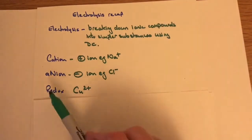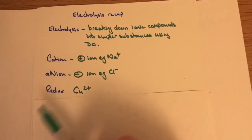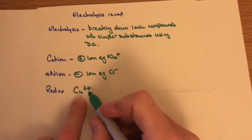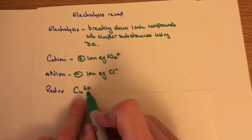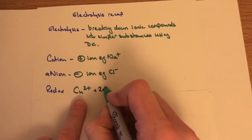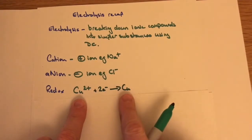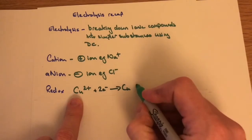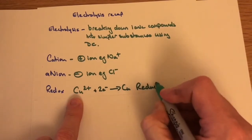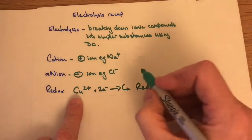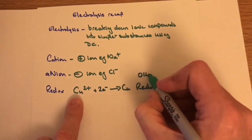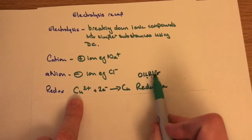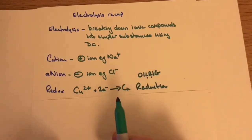Redox is a combination of reduction and oxidation, all in terms of electrons. Here we've got a cation, Cu²⁺ copper ion — because it's two-plus it needs to pick up two electrons to become copper with no charge. This is gaining electrons, so this is an example of reduction. If you're thinking how do I remember this — OIL RIG.